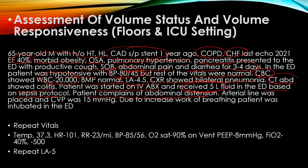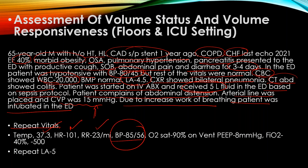After fluid resuscitation, the patient complained of abdominal distension. An arterial line was placed and CVP was 15 mmHg. Due to increased work of breathing, the patient was intubated in the ED. Repeat vitals: temperature 37.3, heart rate 101, respiratory rate 23 per minute, blood pressure still low at 85 over 56, oxygen saturation 90% on vent with PEEP of 8, FiO2 40%, tidal volume 500. Repeat lactic acid came back at 5. The question is: does this patient need more fluid or not?